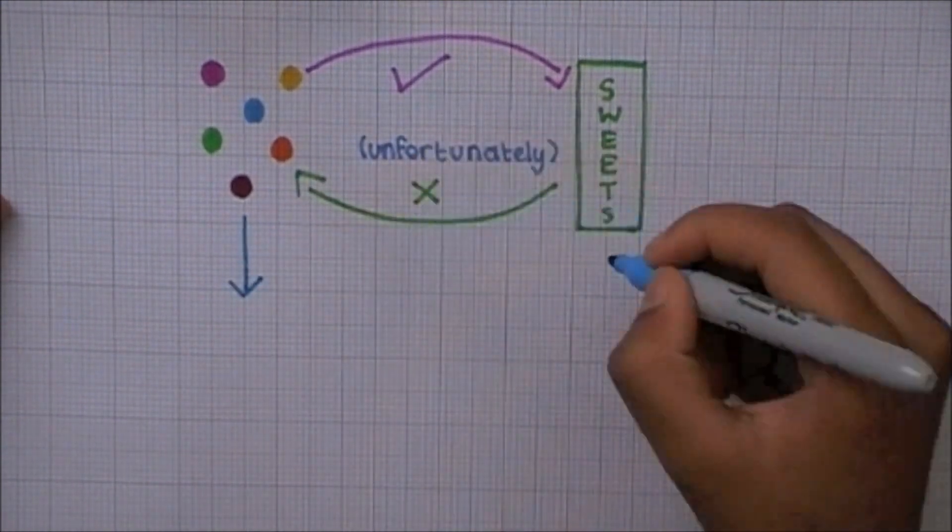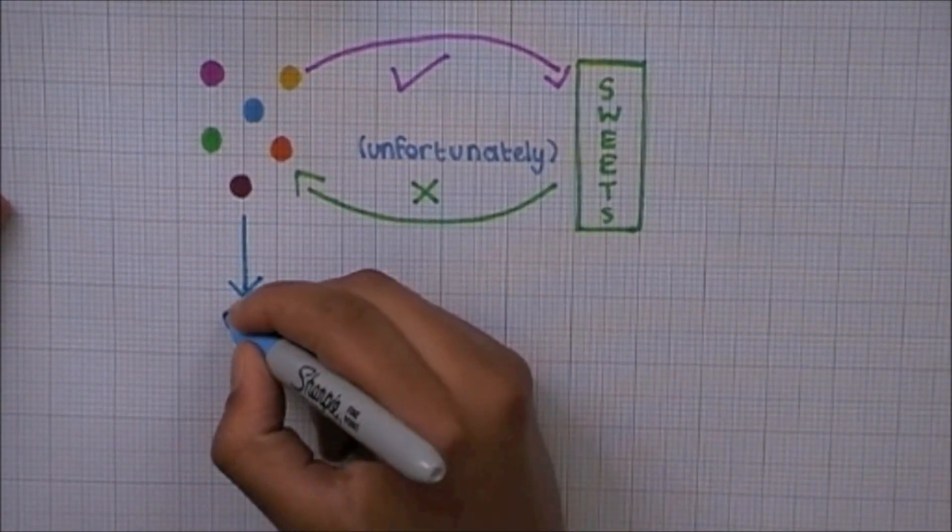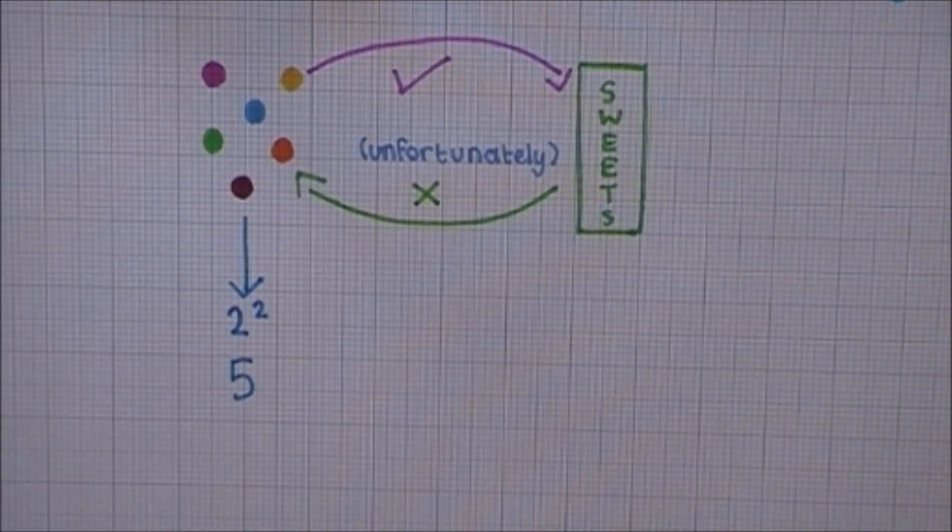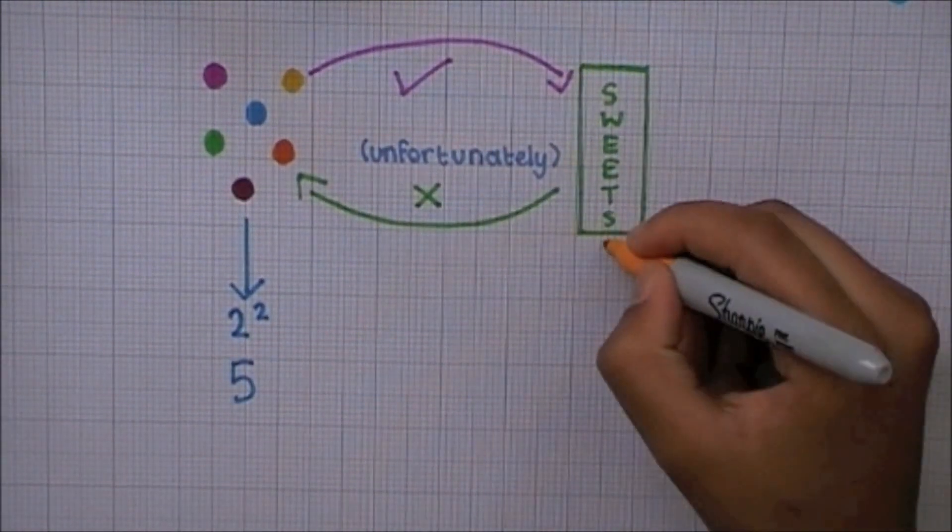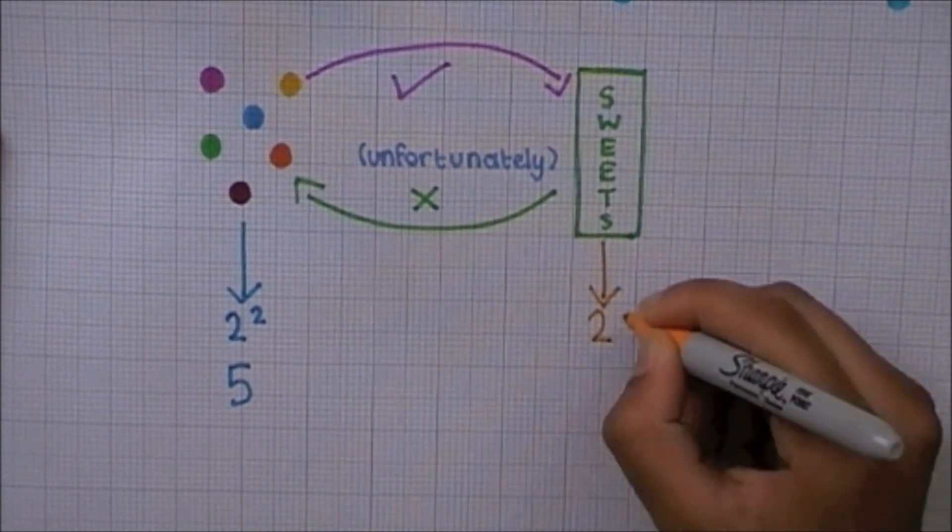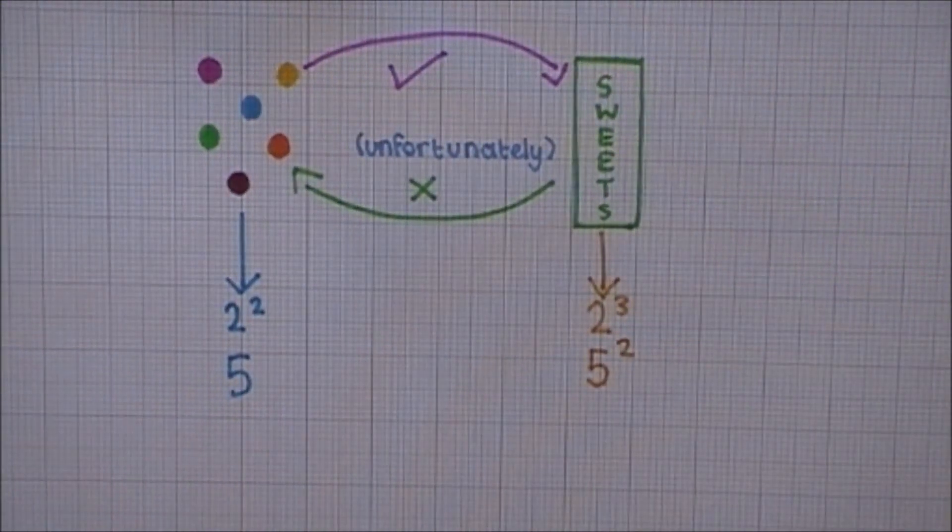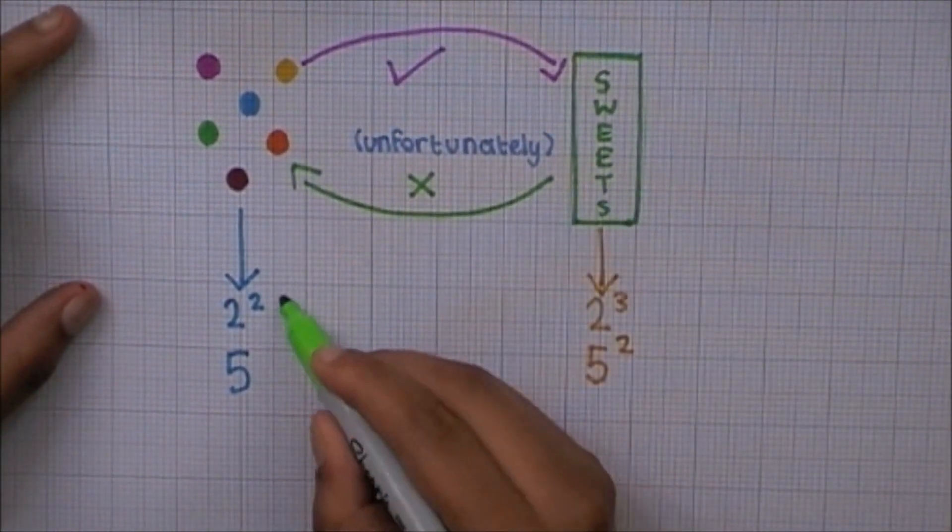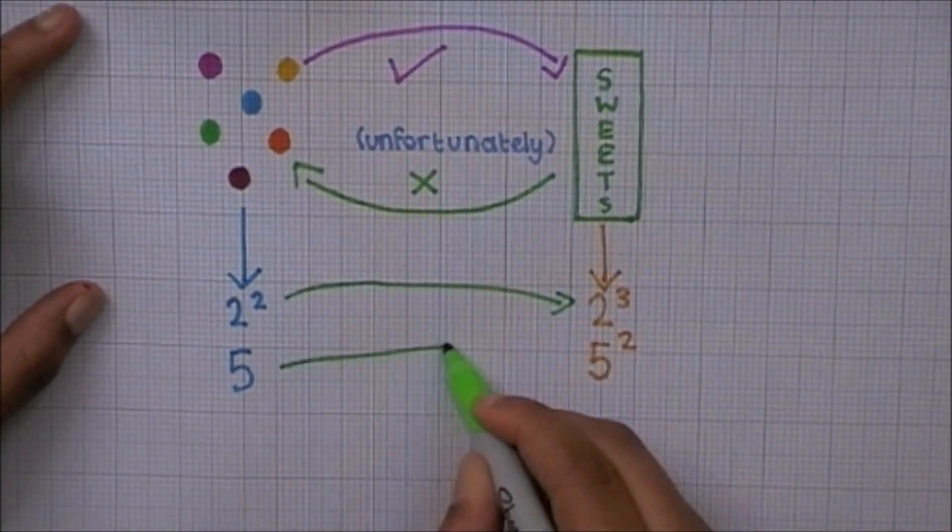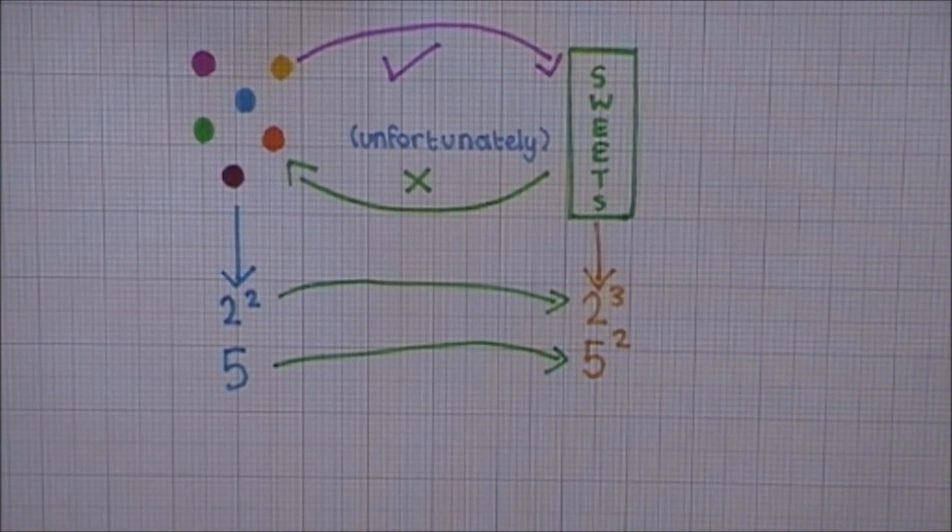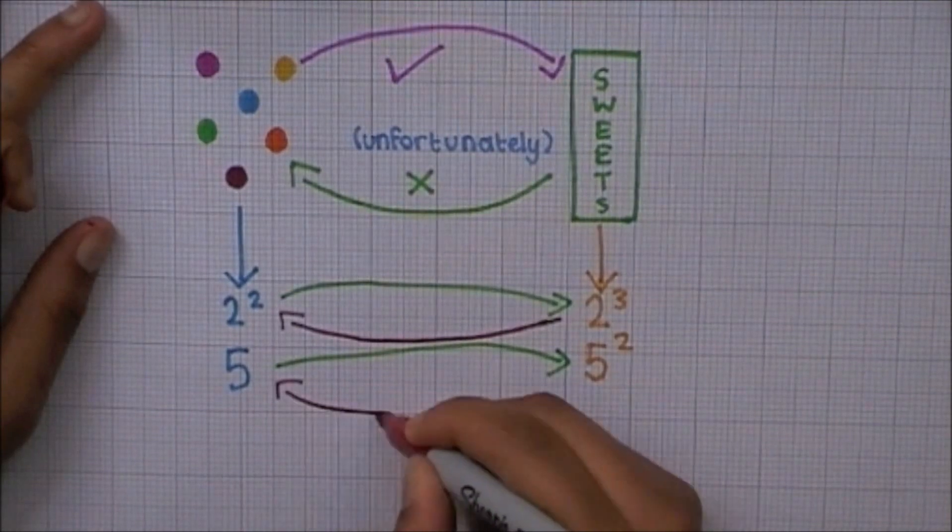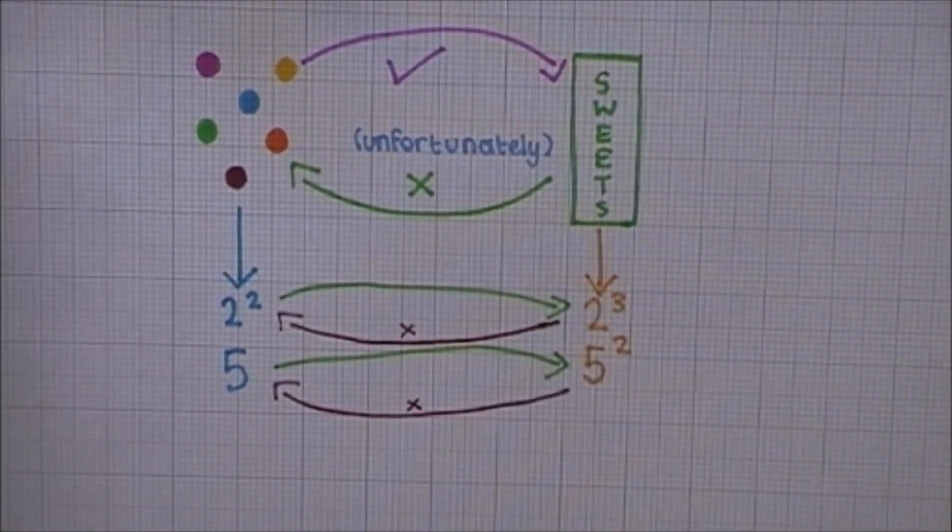How is this relevant to our example? Well, let's say that the individual sweets are the same as our 2 to the power of 2, or our 5, and that 2 to the power of 3 and the 5 to the power of 2 are the same as packets of sweets. 2 to the power of 2 can, therefore, go into 2 to the power of 3, just as 5 can go into 5 to the power of 2. However, 2 to the power of 3 cannot go into 2 to the power of 2, and 5 to the power of 2 cannot go into 5.